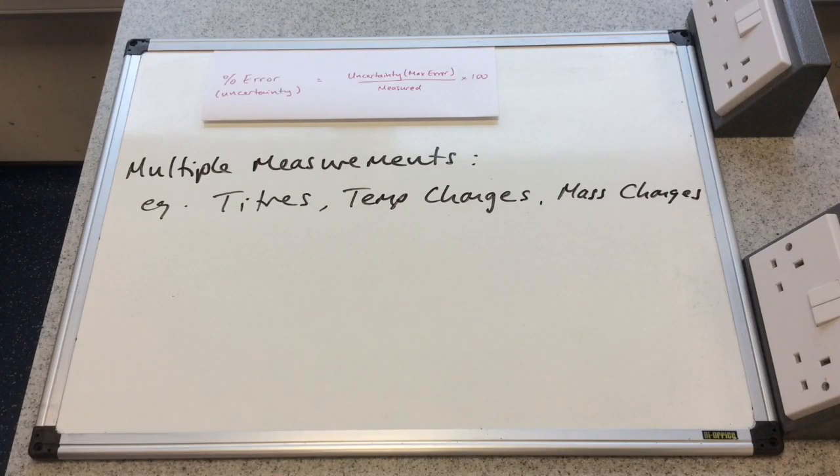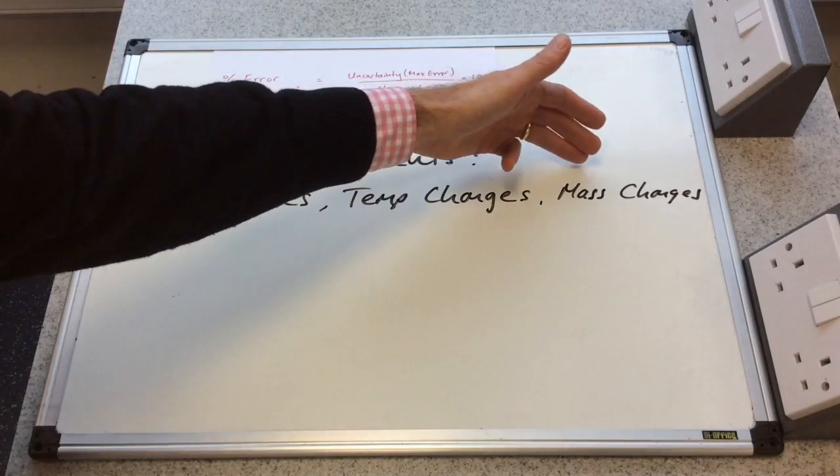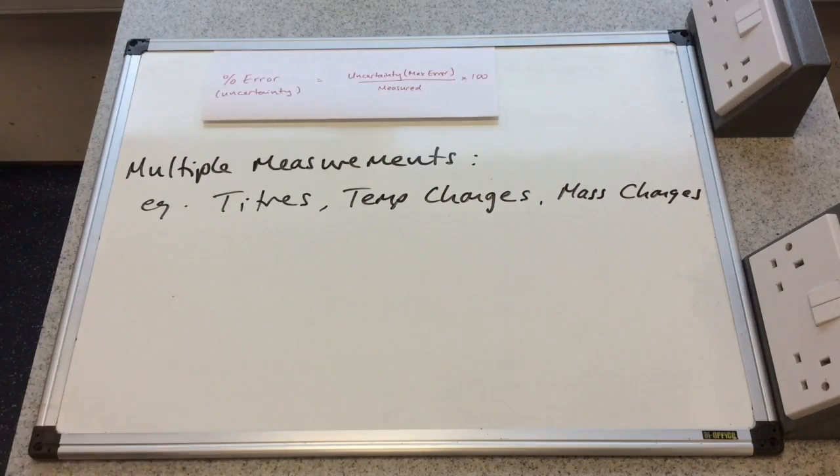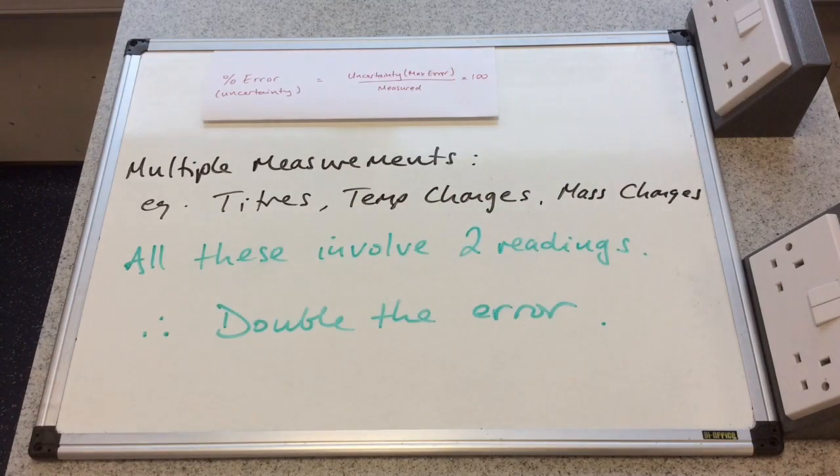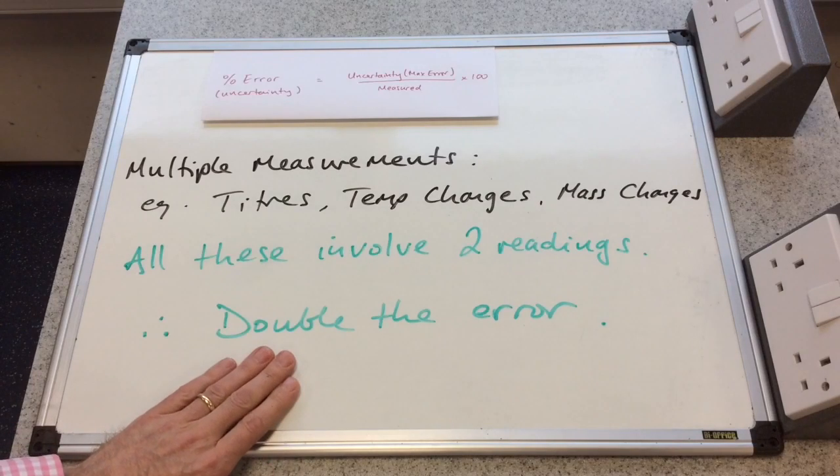So you measure, say, for example, the mass of a crucible at the start, heat it up, measure the mass again. What's the change in mass? Again, you've got two mass readings to get the change. So because all of these involve two readings, we simply double the error.